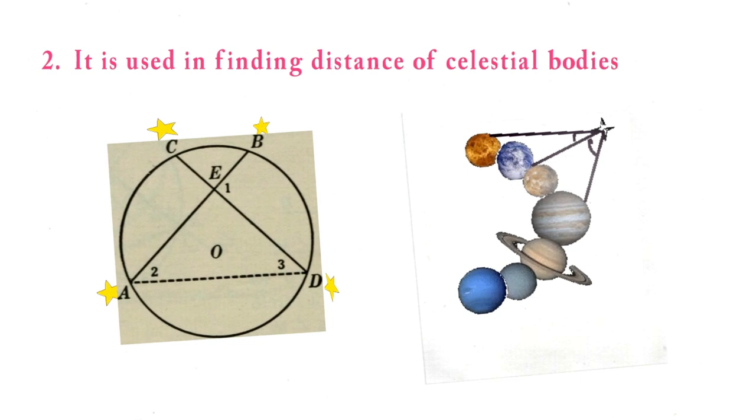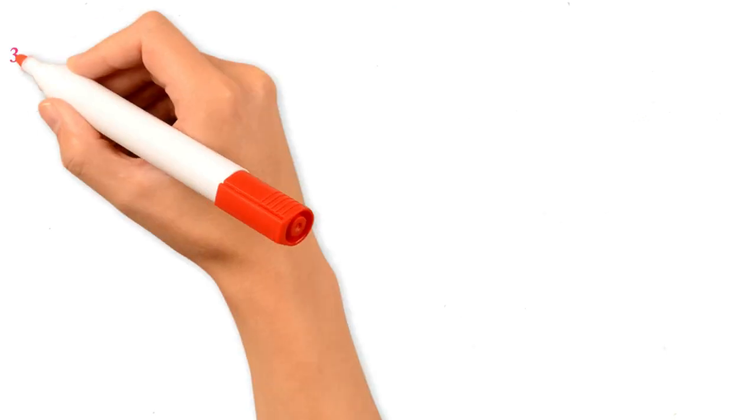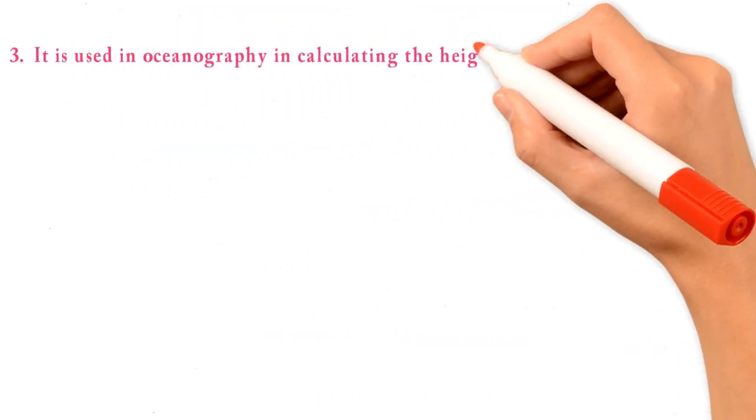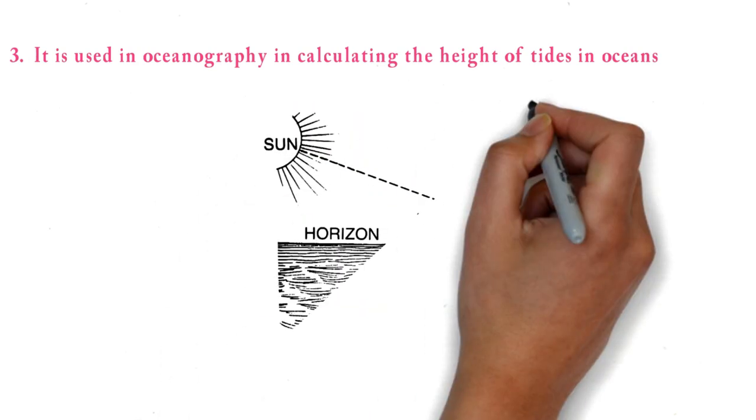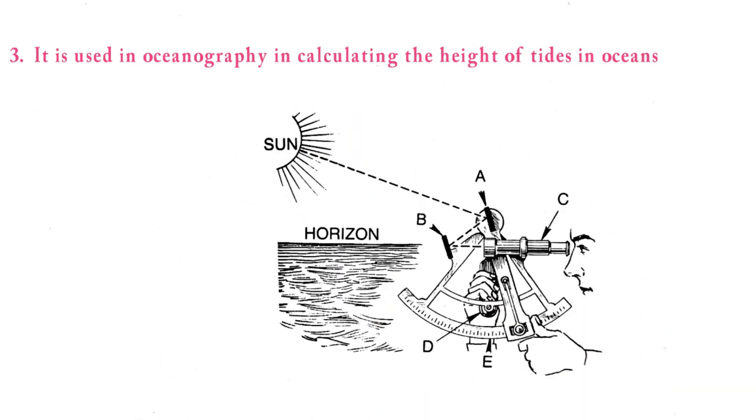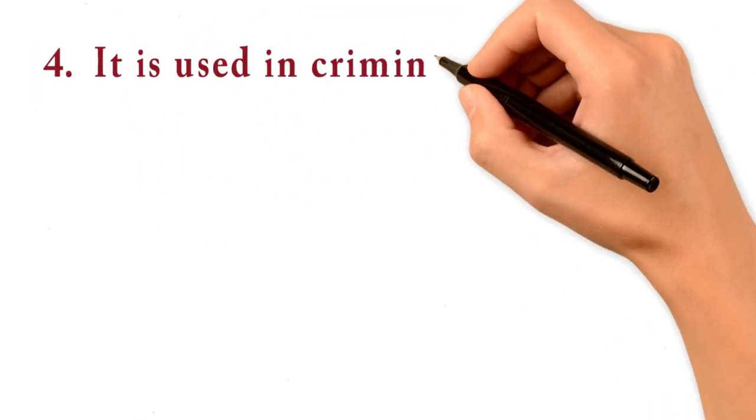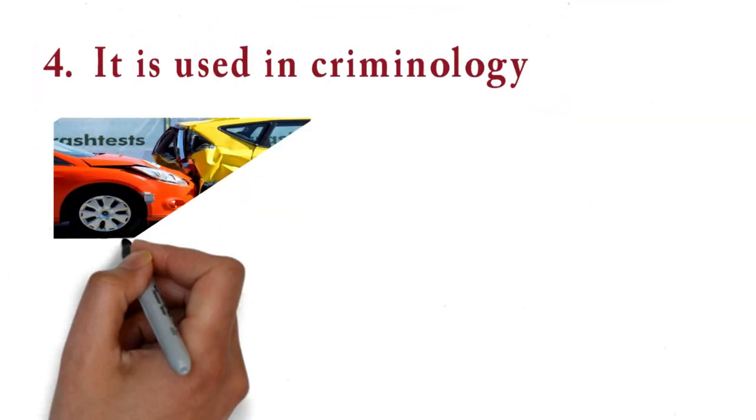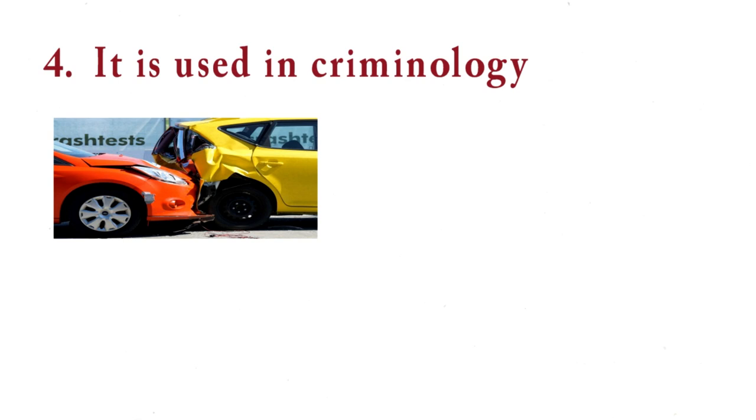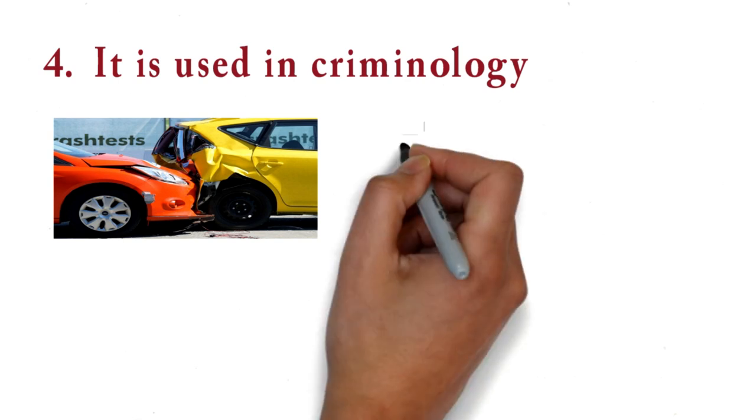It is used in oceanography in calculating the height of tides in oceans. Trigonometry is used in criminology to estimate what might have caused a collision in a car accident, or how did an object fall down from somewhere, or which angle was the bullet shot.